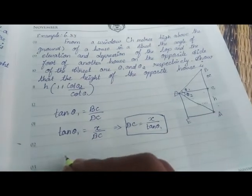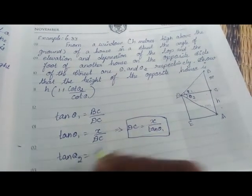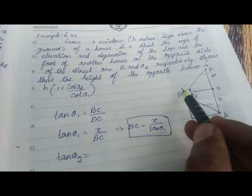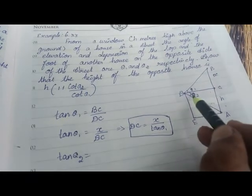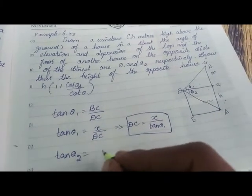Now for theta2, tan theta2 is equal to this triangle. So this triangle is the opposite side divided by adjacent side.